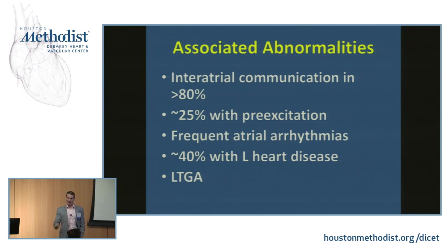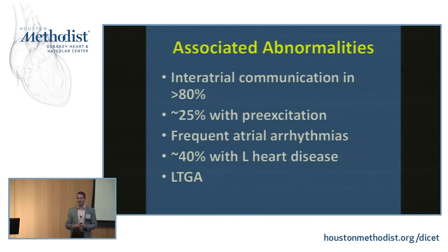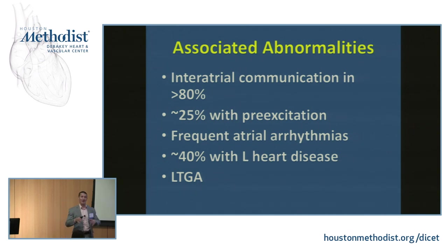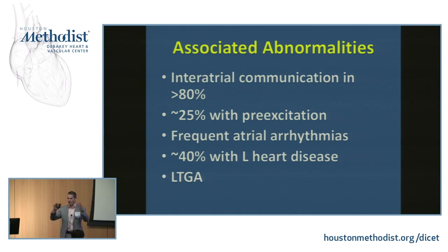Twenty-five percent of cases will have an accessory pathway and ventricular pre-excitation. This is particularly nefarious in somebody with a big, stretched, electrically remodeled right atrium predisposed to atrial arrhythmias including atrial fibrillation — a robust accessory pathway can pound the ventricle with high-frequency impulses leading to ventricular fibrillation. Approximately 40% will have associated left heart disease, most commonly mitral valve prolapse or left ventricular non-compaction cardiomyopathy, particularly if there's a genetic association with myosin heavy chain 7. LTGA patients also seem to have a high prevalence of Ebsteinization of the systemic AV valve.